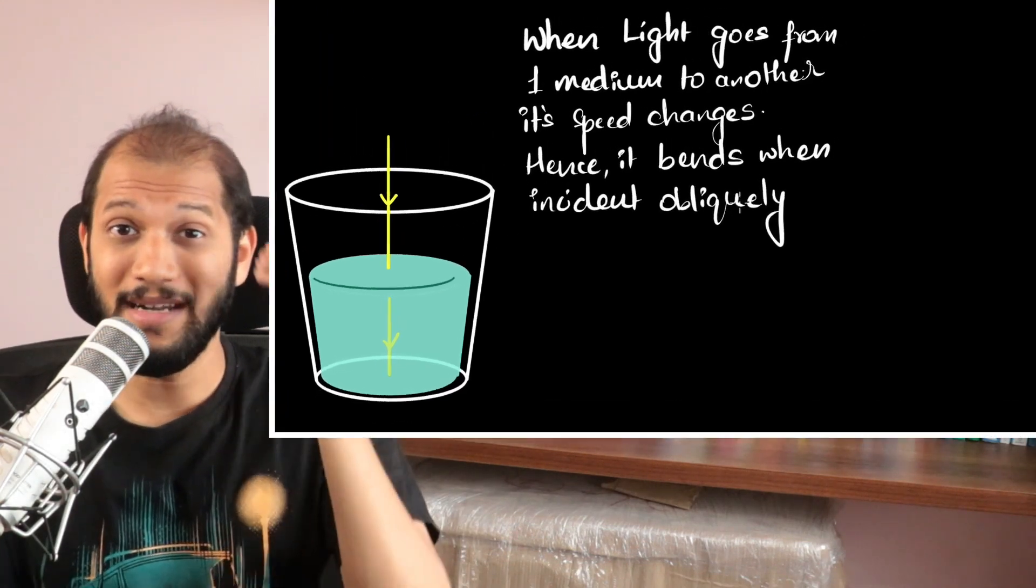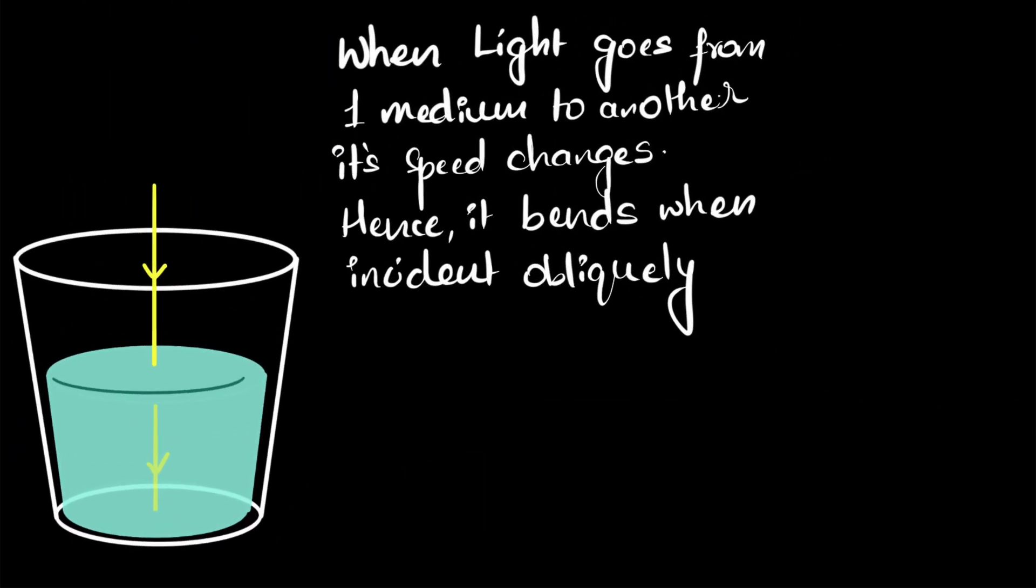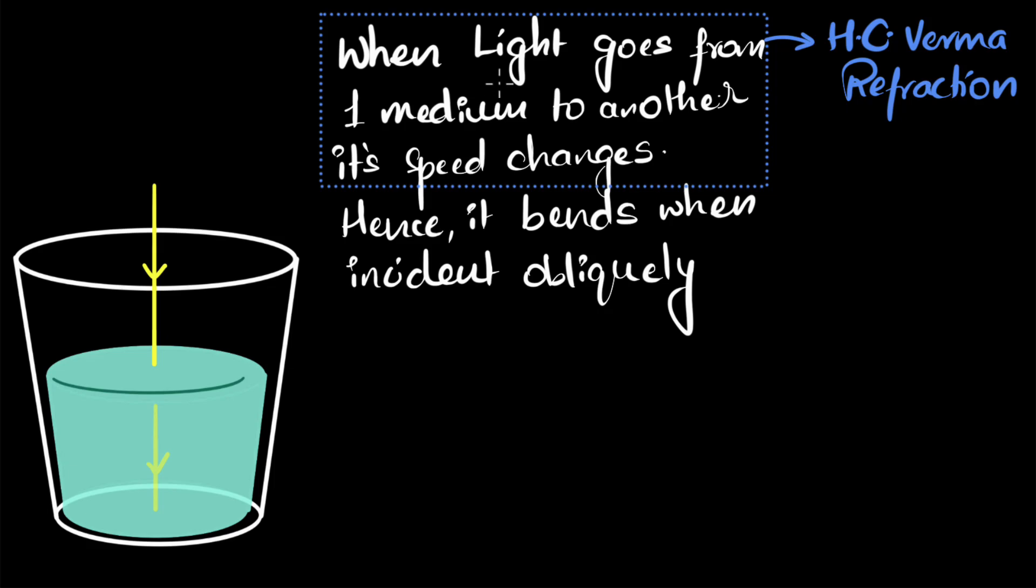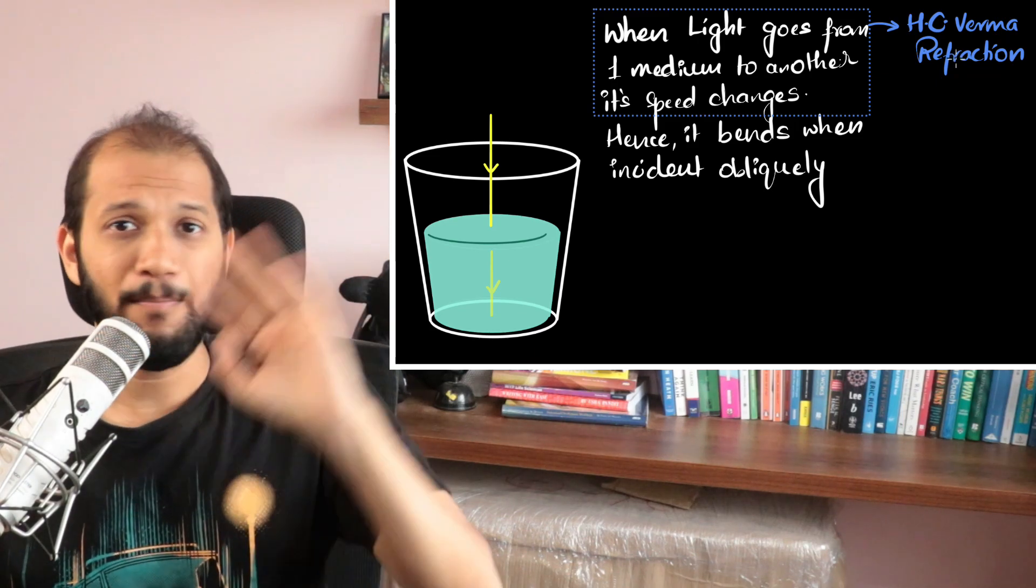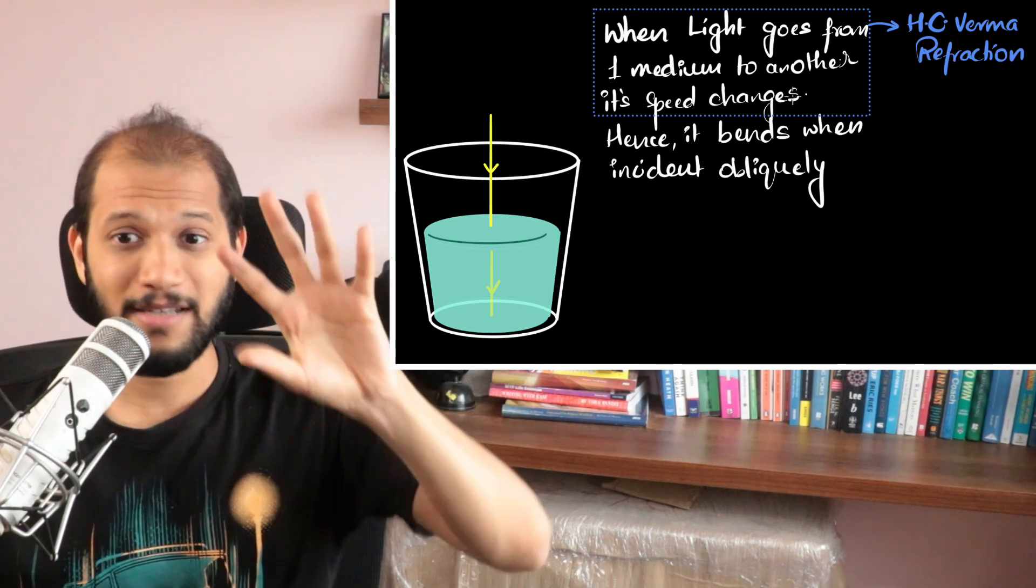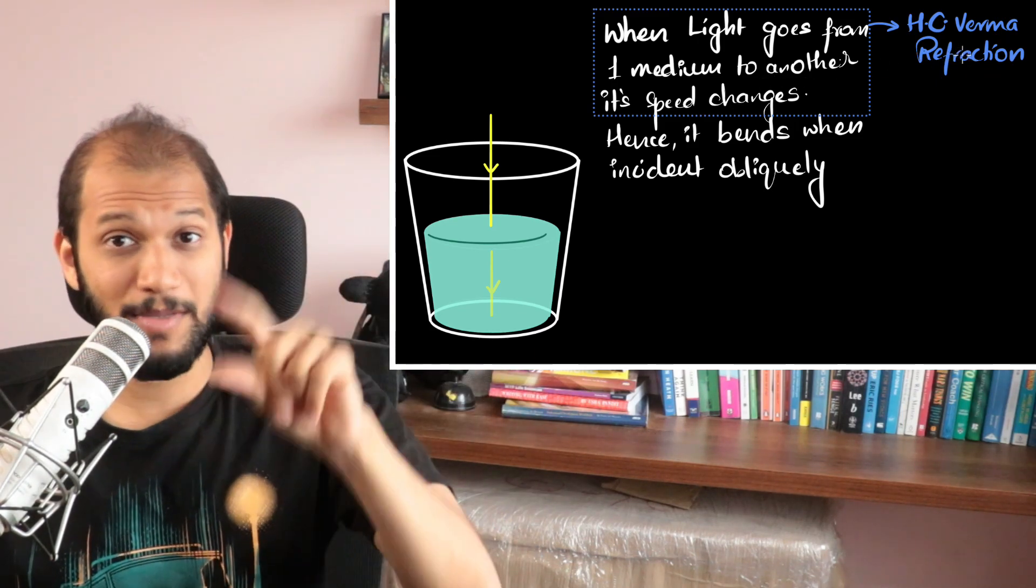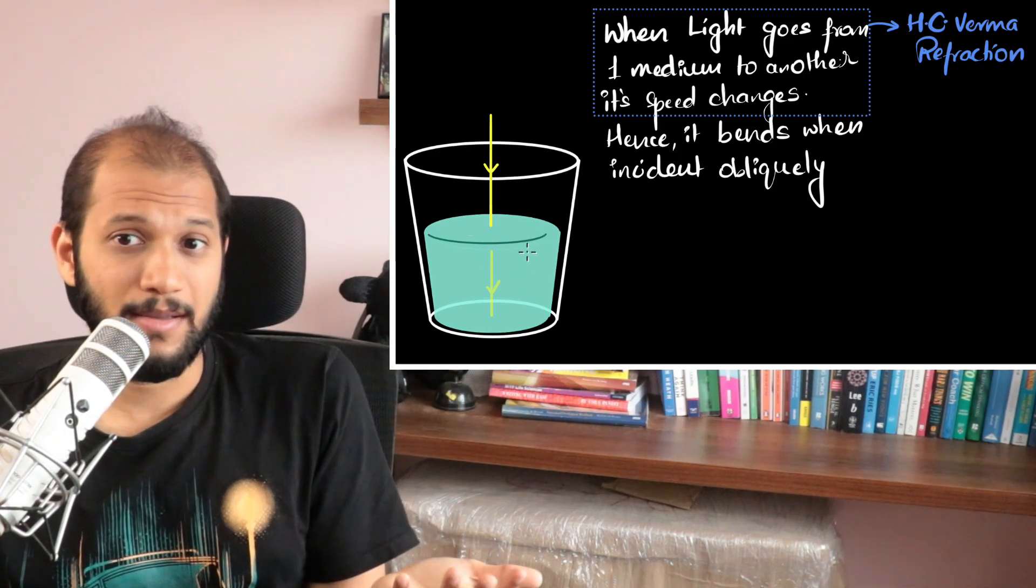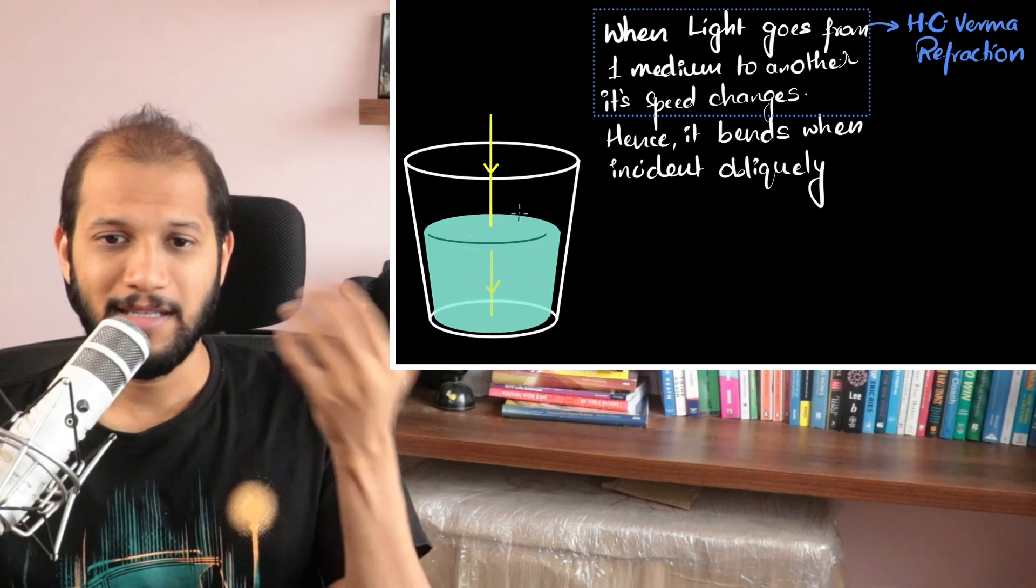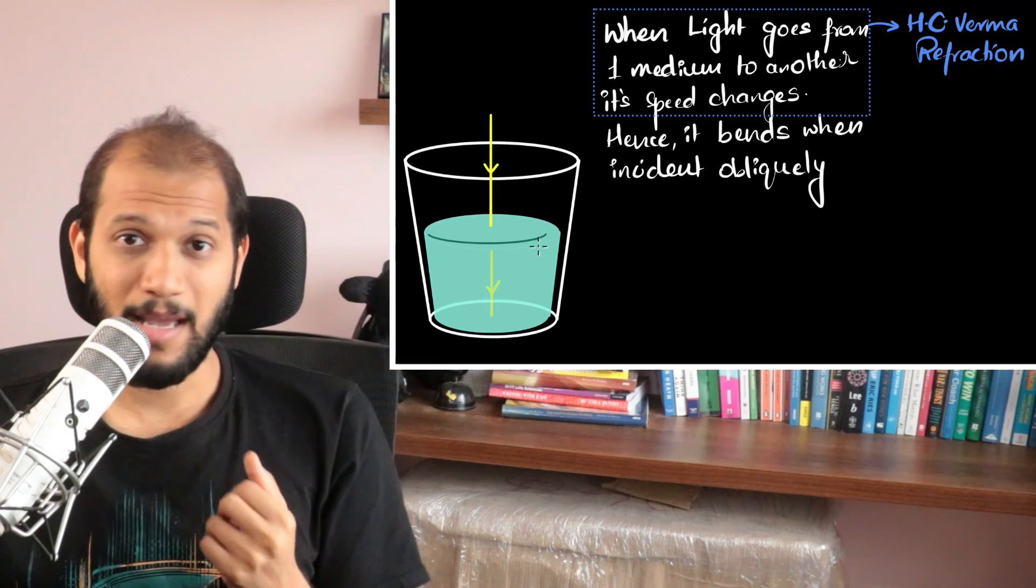The disagreement comes on the definition of refraction. So Professor Verma says whenever light goes from one medium to another, the fact that its speed changes, this itself is what we call refraction. Bending or not doesn't matter. Refraction is just the fact that speed changes. And so from this definition, in this particular case, refraction is happening. Because it's going from one medium to another, its speed is changing, and so refraction is happening.